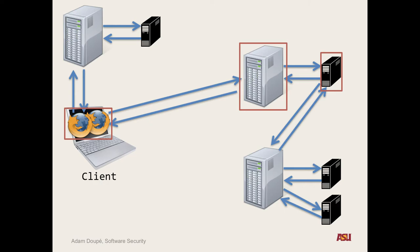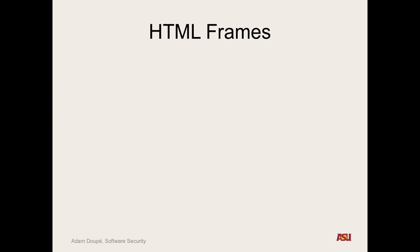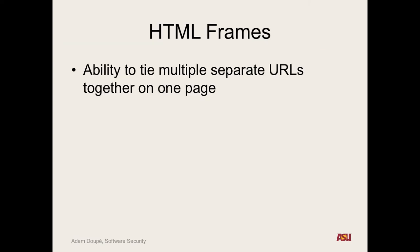What we're going to look at first is what does the browser do to try to ensure the security of accessing completely different sites and executing random JavaScript code from those sites? It seems absolutely outrageous. But first we're going to look at frames — we can basically put multiple separate URLs together on one page.